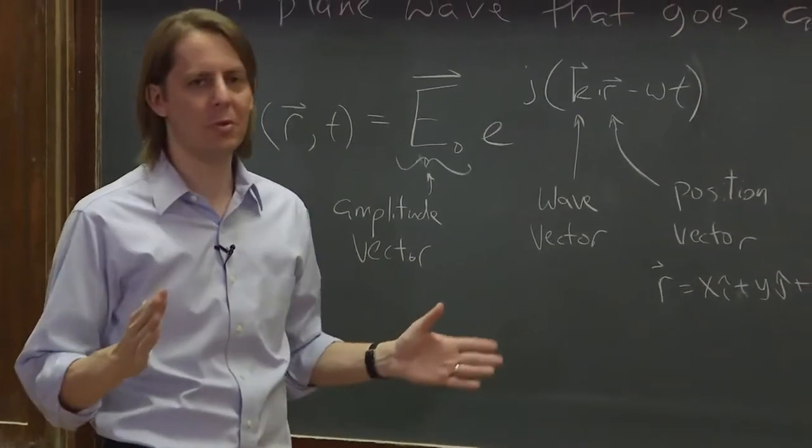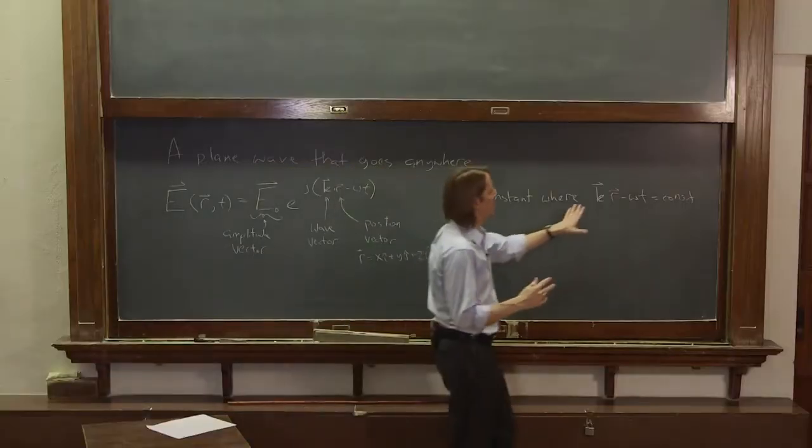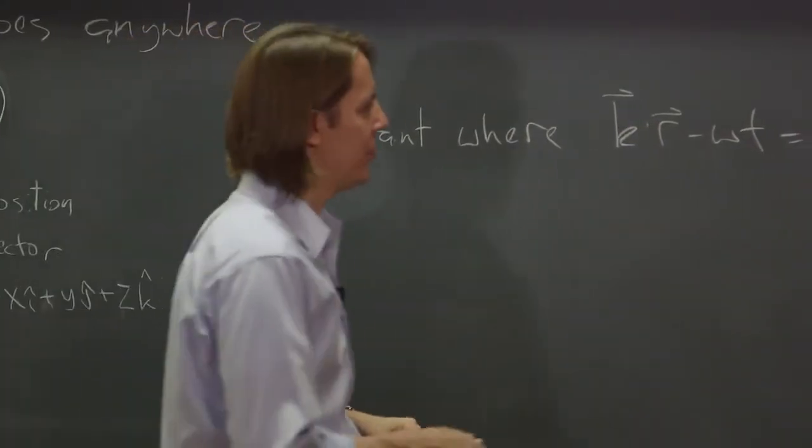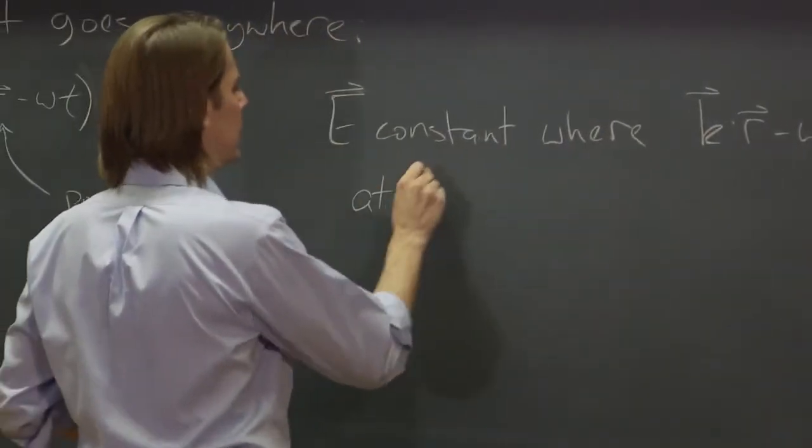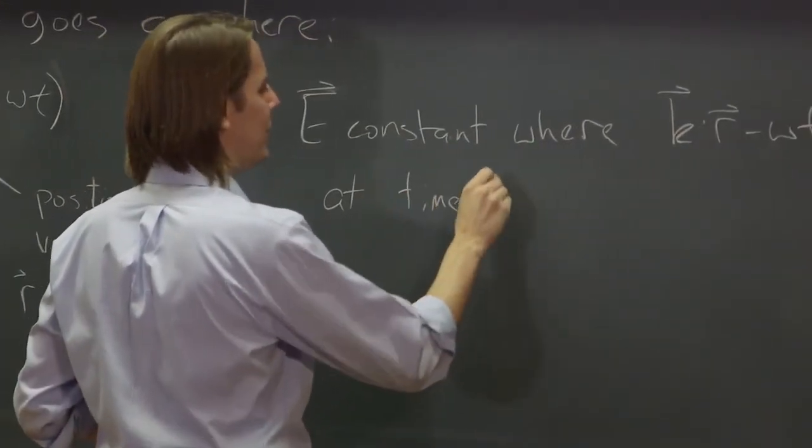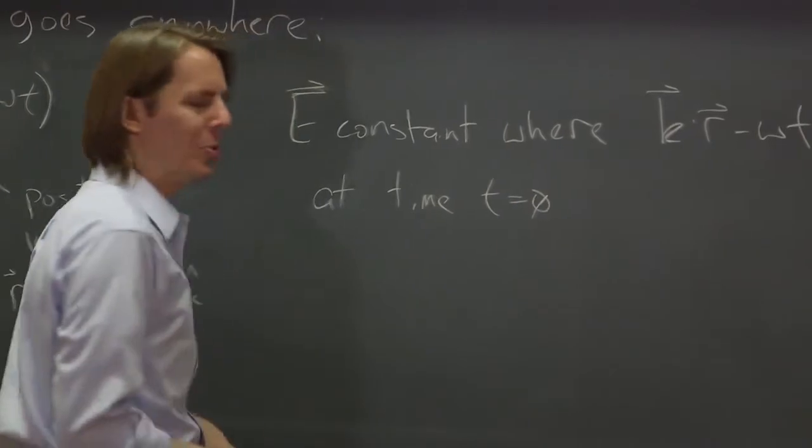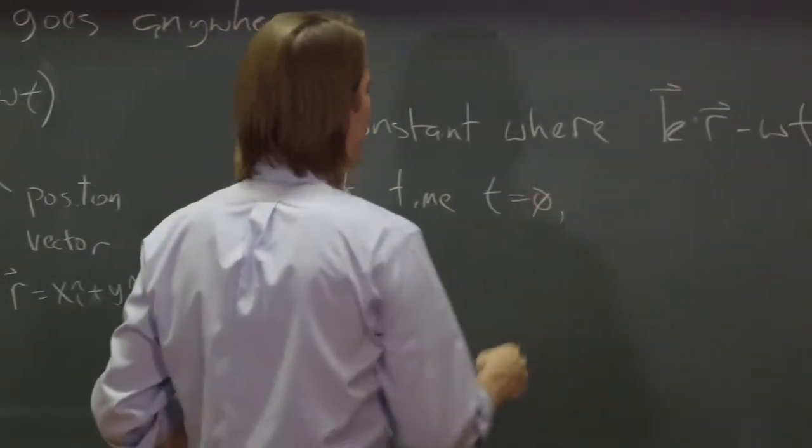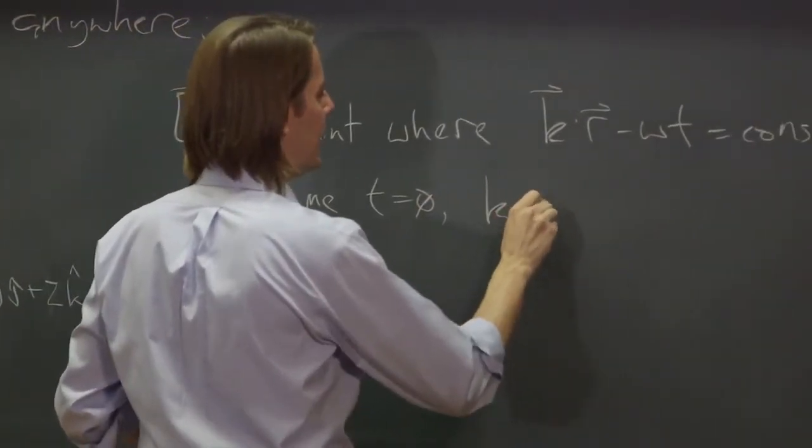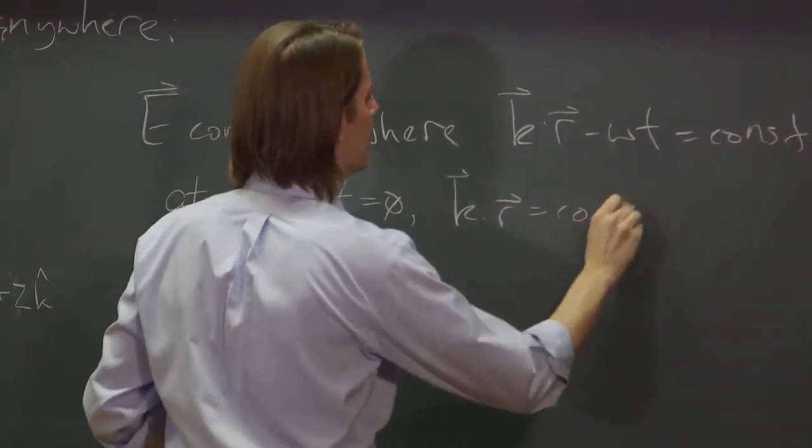So we could just say, let's do it at time equals zero. What we really care about right now is the spatial part. Where's k dot r a constant? So at time equals zero, we need k dot r to be a constant.